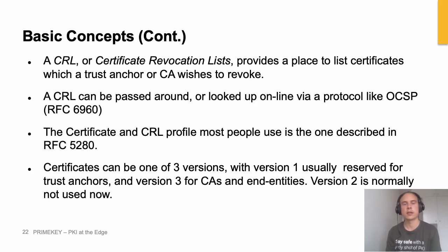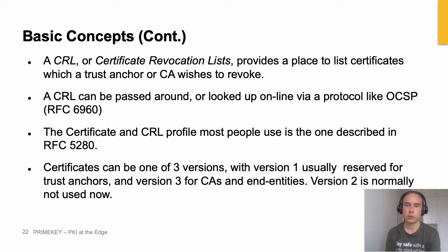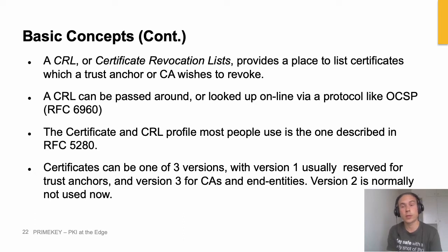There are a bunch of standards for this. OCSP is described in RFC 6960, and certificates and CRL profiles are described in RFC 5280. Both certificates and certificate revocation lists come in three different versions: version one is only used for trust anchors, version two is not being used anymore, and version three is typically used for end entities.